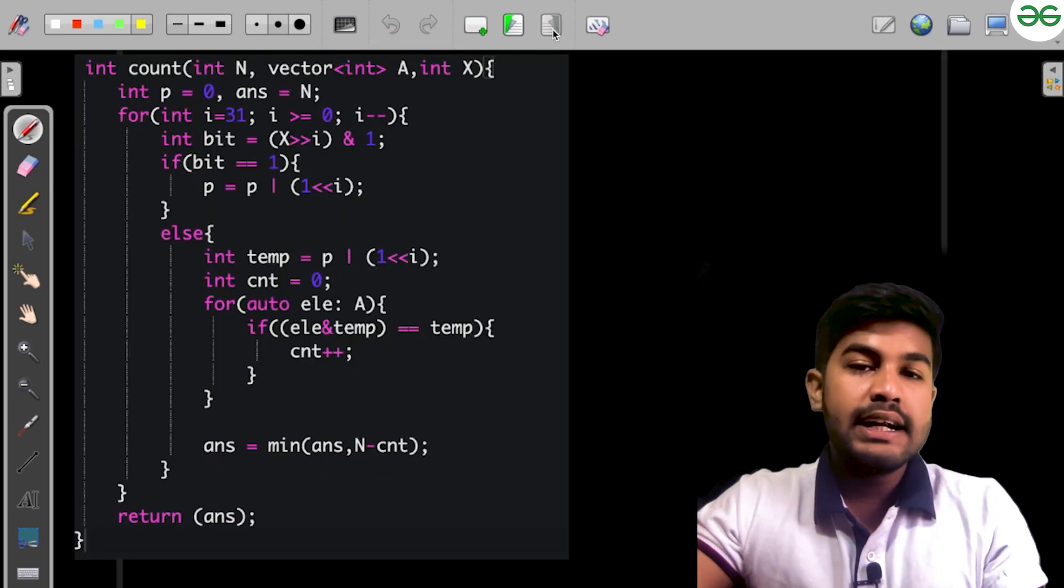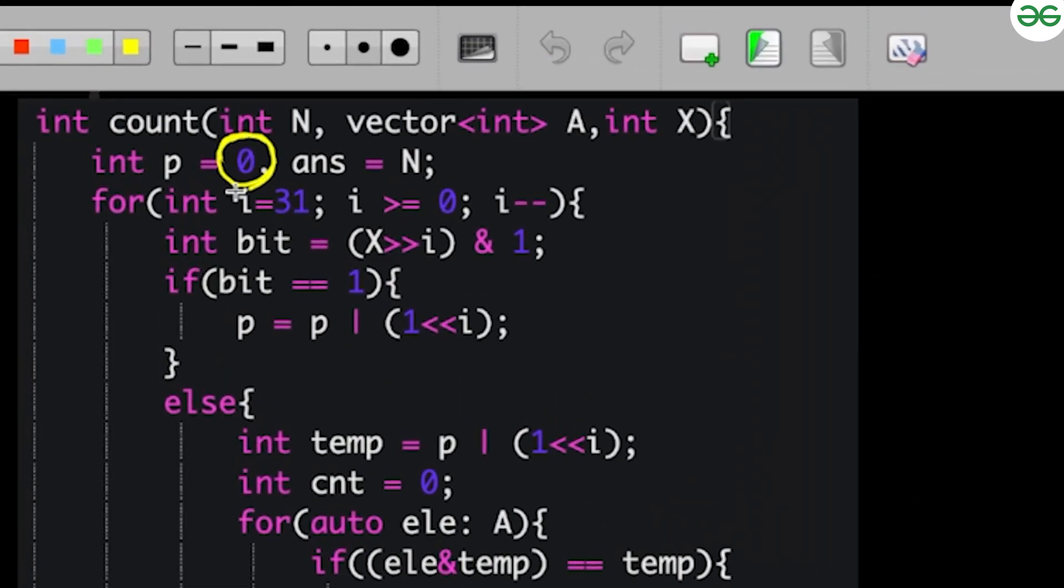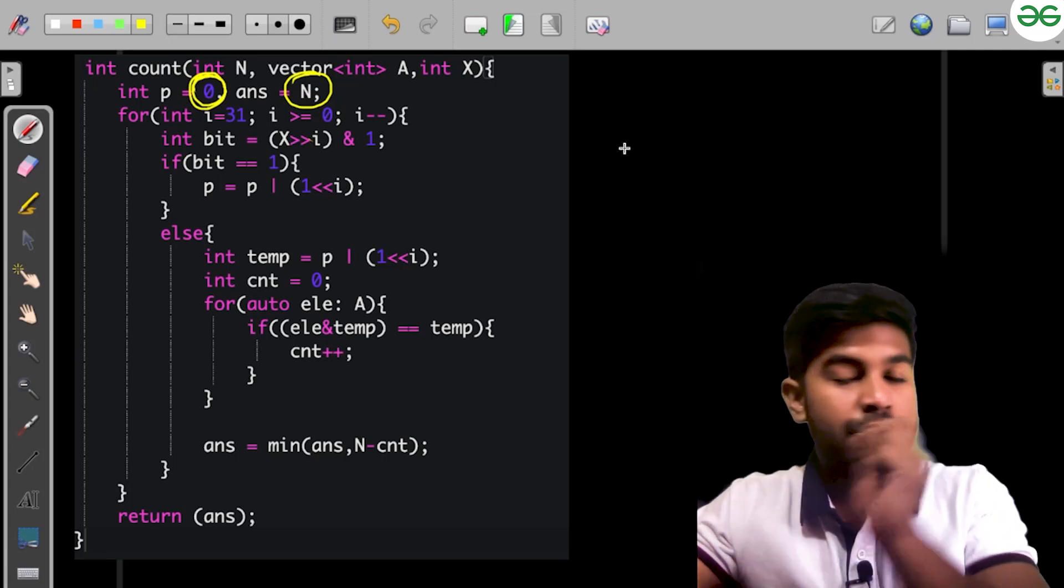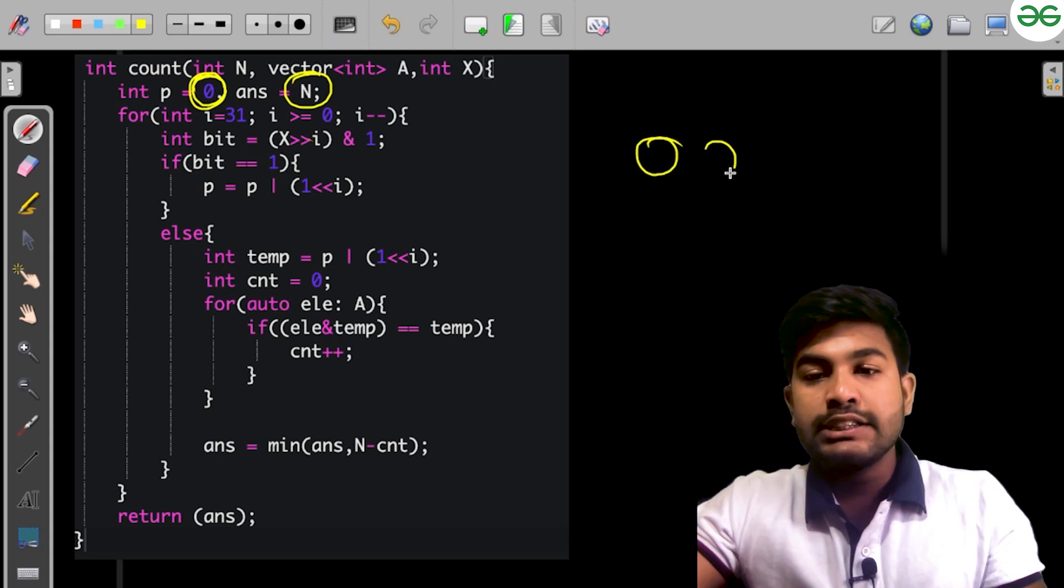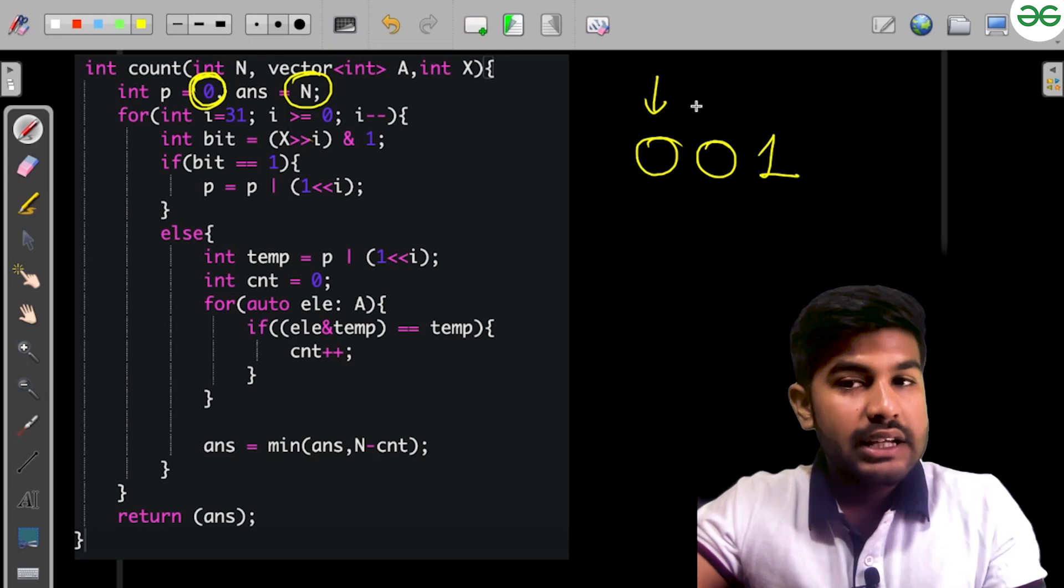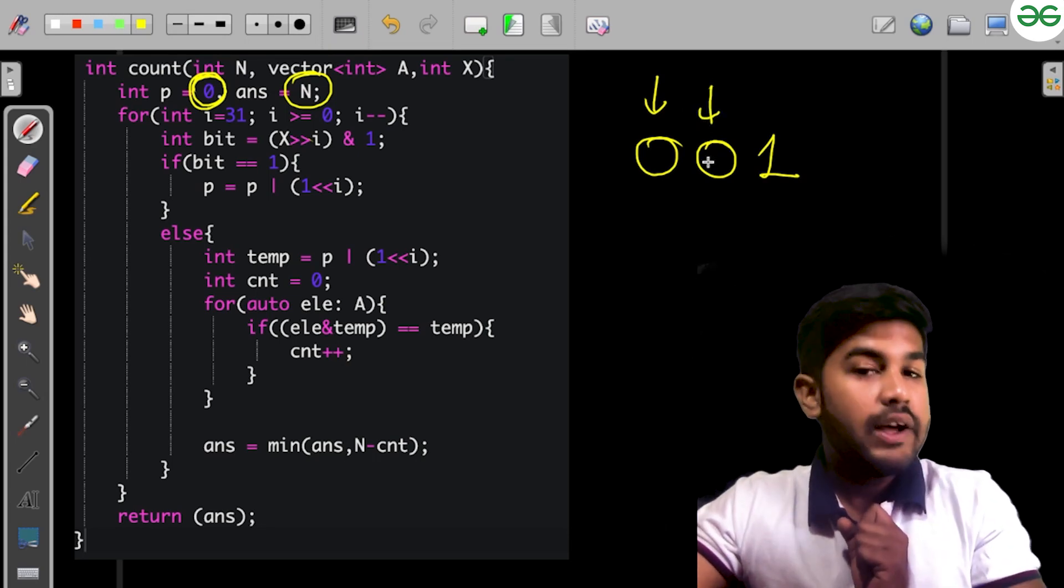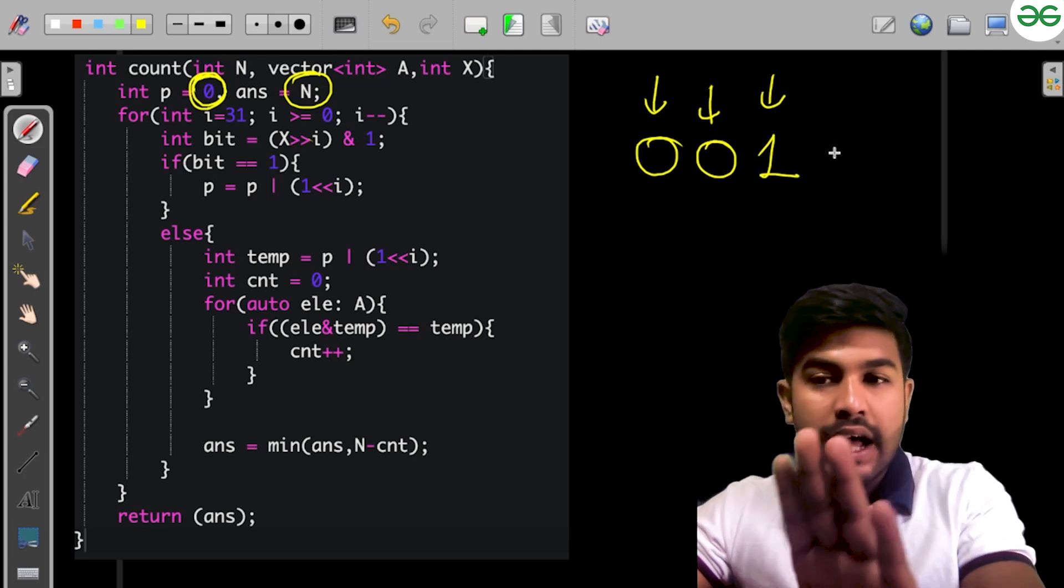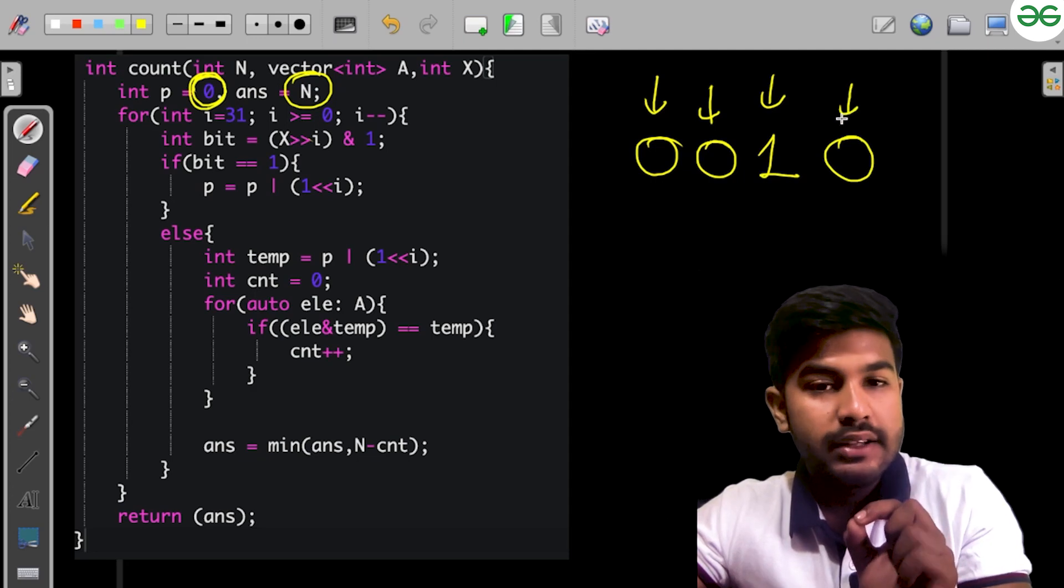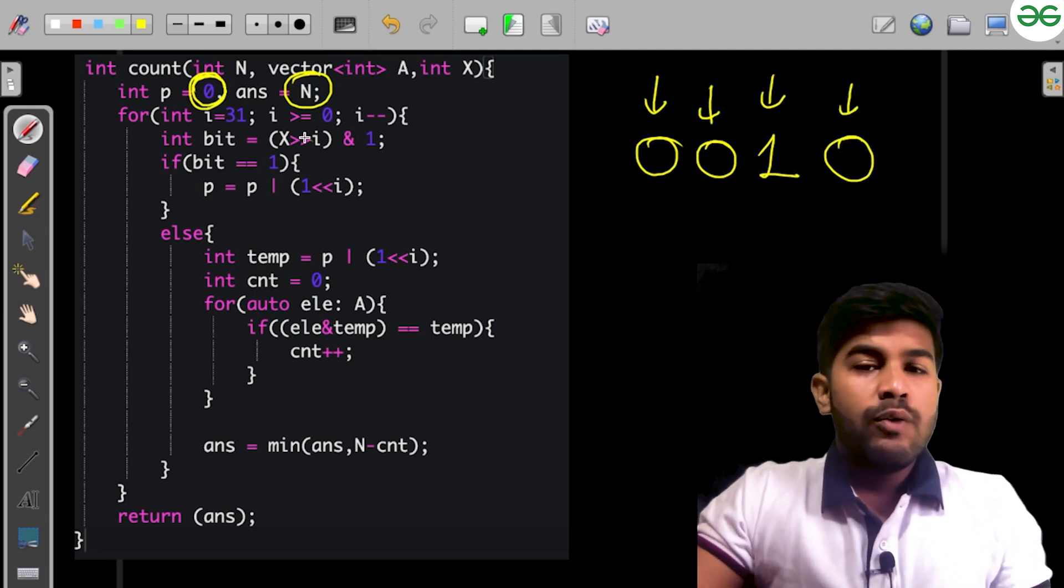Here we save which values are set. Answer is the largest value we need to change. We check from the most significant bit to least significant bit because if we're able to set the MSB, that can be an answer. If we set this bit, then we need to set one more bit.